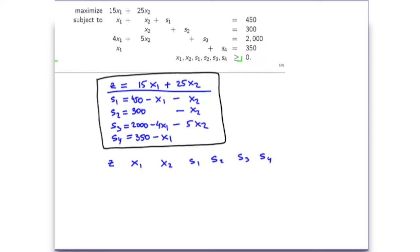We'll also have a column for the right-hand sides. In the dictionary representation, it was clear which variable is basic in each row because we always put the basic variable on the left-hand side. But in the table format, we'll just have coefficients for all the variables — all variables moved to the left, only constants on the right. So it won't be immediately apparent what the basic variable is for a given row. Therefore, we'll have a column BV to specify the corresponding basic variable for each row.